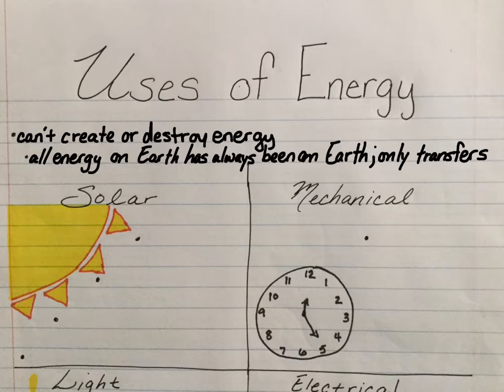Light turns into mechanical. We're going to talk about six different forms of energy: solar and mechanical, light, electrical, thermal, and sound.